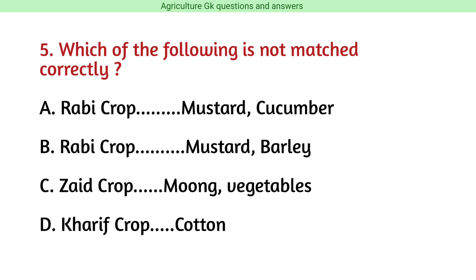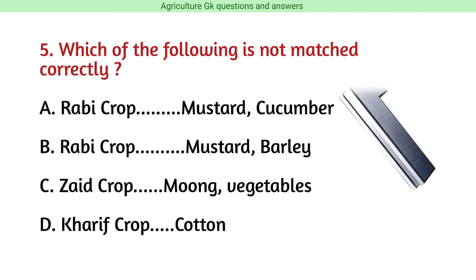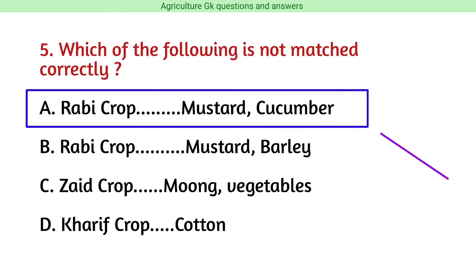Question number 5. Which of the following is not matched correctly? The correct answer is option A, i.e., Rabi crop, mustard, and cucumber.